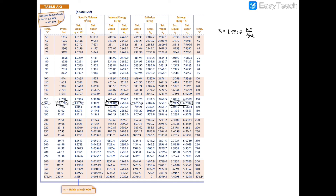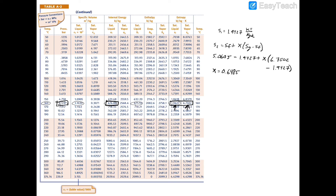To find the quality x, we use: s2 = sf + x(sg - sf). We have s2 = 5.0605, sf = 1.9427, and sg = 6.7502 from the property table. Solving for x: x = (5.0605 - 1.9427) / (6.7502 - 1.9427) = 0.6485. So the quality is approximately 65%.